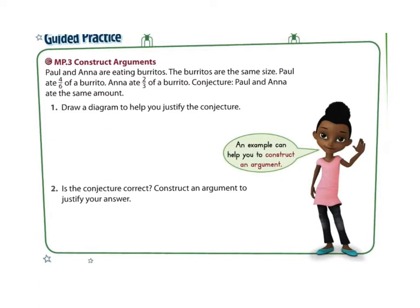Paul and Anna are eating burritos. The burritos are the same size. Paul ate four sixths of a burrito and Anna ate two thirds of a burrito. Conjecture: Paul and Anna ate the same amount. Draw a diagram to help you justify this conjecture — you are trying to prove that this conjecture is correct, that they ate the same amount.